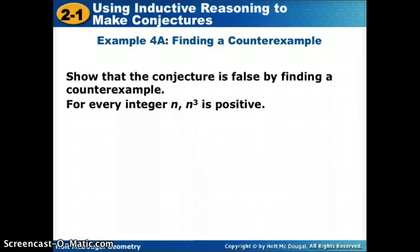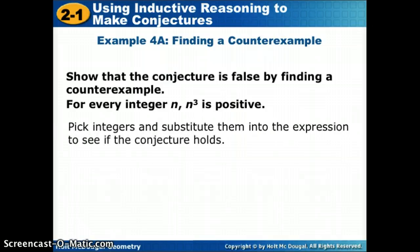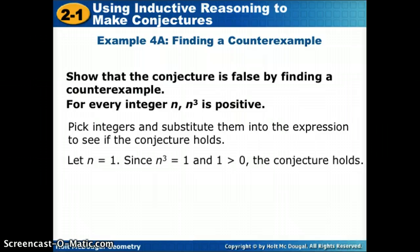So here's one that's a little more difficult. Show that the conjecture is false by finding a counterexample. So if I were given this statement, for every integer, we just call it n. For any number, an integer is a whole number that is positive or negative. So any whole number, if I cube it, it's positive. So we could just choose some integers and plug them in and see if it works. I tried to choose different types. So maybe we start with a positive number. Pick an easy one. Let's say n is 1. Since n cubed, 1 times 1 times 1, is 1, 1 is greater than 0, so I see that the conjecture is true. So if I plug in a positive number, n cubed is positive.